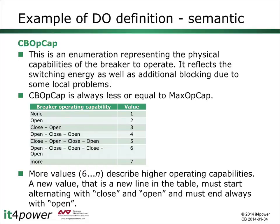For example, if the value of the data object circuit breaker operating capability has the value 2, that means we can still do one open operation. If it has the value 3, that means we can do a close and an open again.